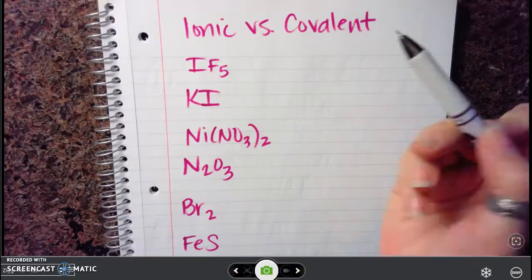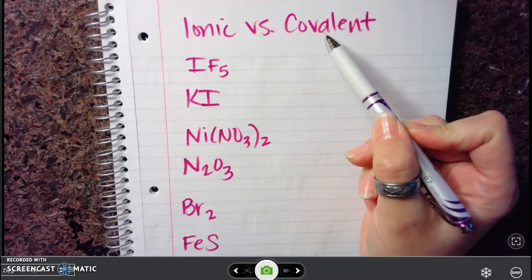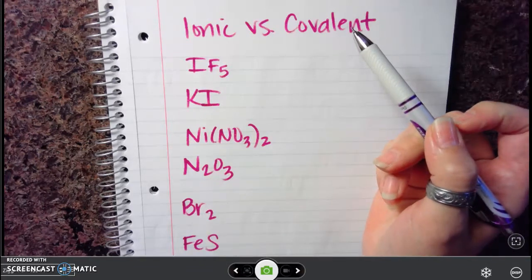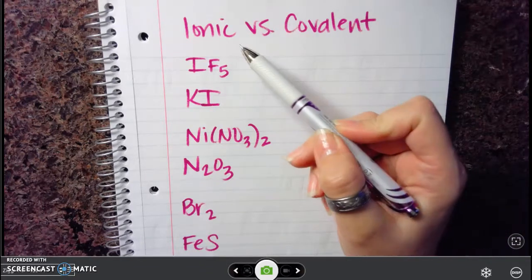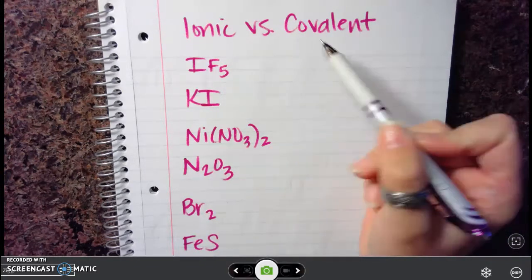In this video, we're going to look at the difference between an ionic and a covalent compound. The first thing that we need to know is the definition of an ionic bond and a covalent bond.